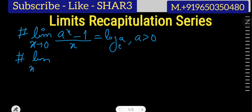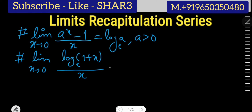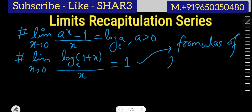The second formula we will take up today is: limit x approaches 0 of log of (1 plus x), where the base of this log function is e, divided by x — its value will be equal to 1. To discuss this formula and related problems, I have made one more video where I have described all the formulas of the logarithmic function, so I advise you to go and watch that video.